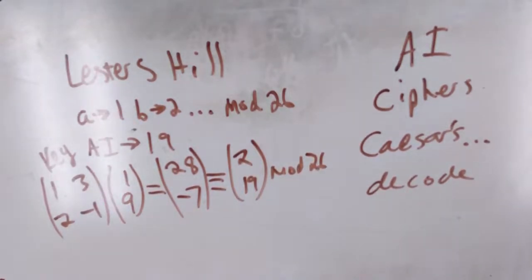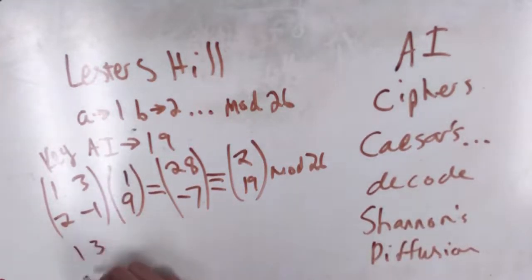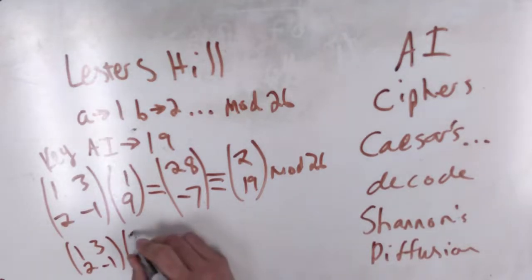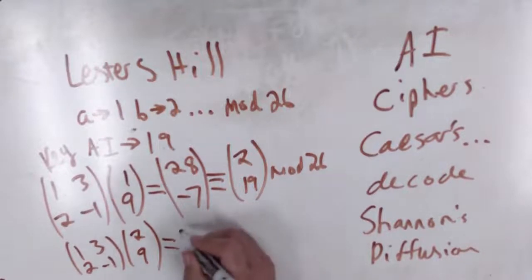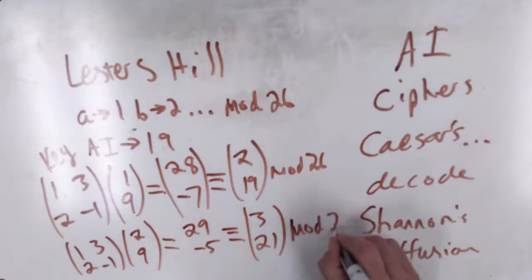So what is significant about Lester's cipher is that it achieves Shannon's diffusion. And what this means is that if you multiply a similar message where, say, only one letter is different, say you change an A to a B, the entire message will be different. This would give you 29 and negative 5, which is equivalent to 3 and 21. So this makes it a very effective encryption method for being difficult to decrypt.